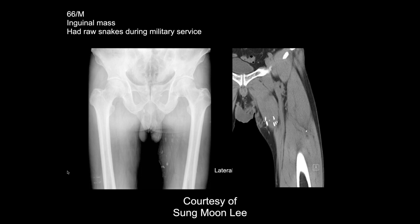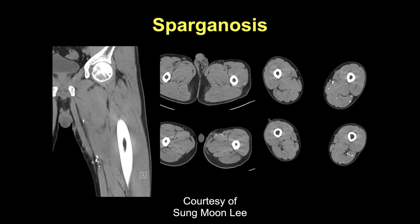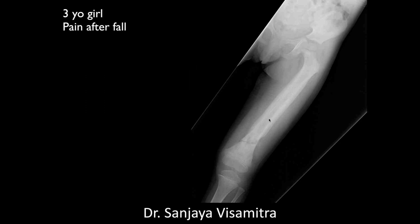A 68-year-old male with an inguinal mass and history of eating raw snakes. This is another case of tapeworm infestation with calcified larvae — sparganosis. Snakes don't carry trichinosis like pigs do; they carry sparganosis instead.